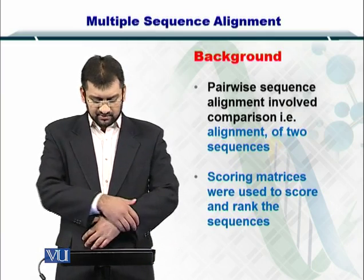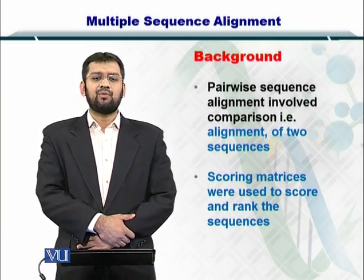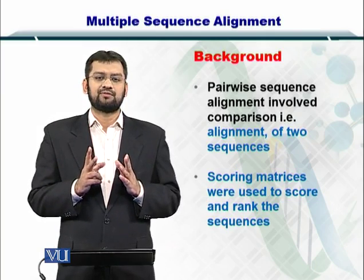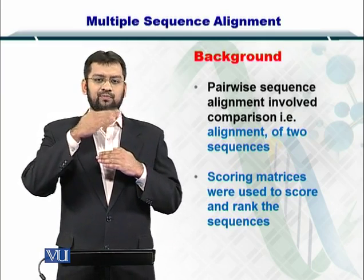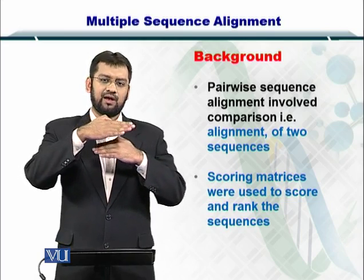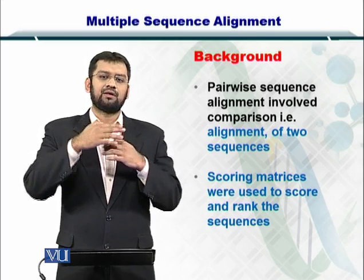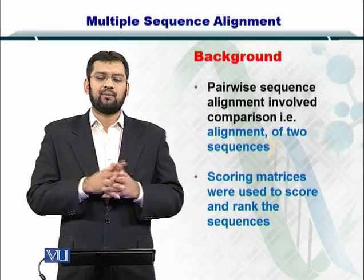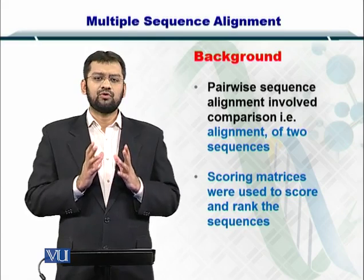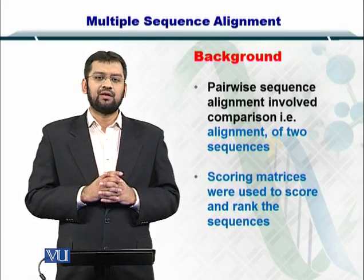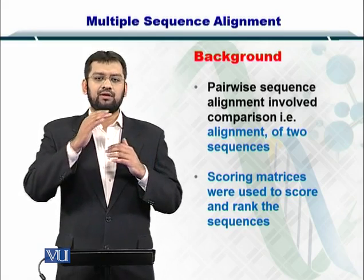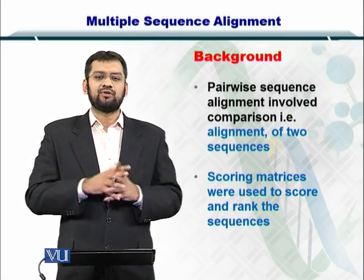To start with multiple sequence alignment — the pairwise sequence alignment only considered two sequences, where one sequence was put on top and the second sequence was put on the bottom, and you try to compare the nucleotides or amino acids between the two sequences. For multiple sequence alignment, the same problem is expanded to include three or more sequences.